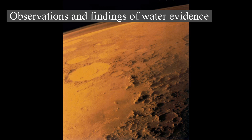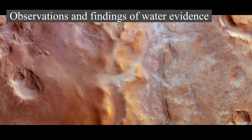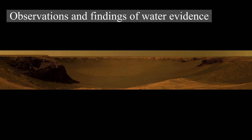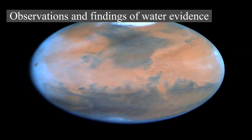On 18 March 2013, NASA reported evidence from the Curiosity rover of mineral hydration — likely hydrated calcium sulfate — in several rock samples, including fragments of Tintina Rock and Sutton Inlier Rock, as well as in veins and nodules in other rocks. Analysis using the rover's DAN instrument provided evidence of subsurface water amounting to as much as four percent water content down to a depth of sixty centimeters, during the rover's traverse from the Bradbury Landing site to the Yellowknife Bay area.